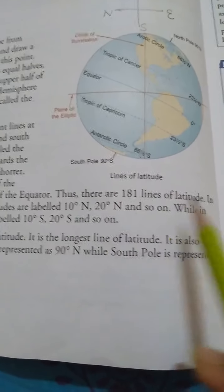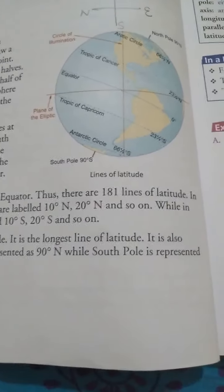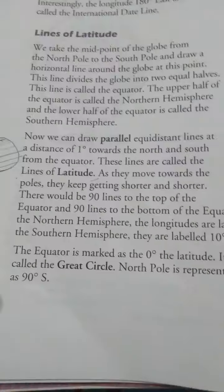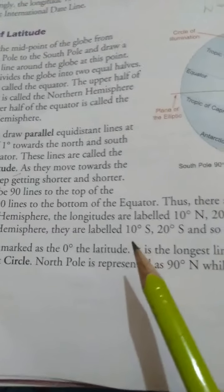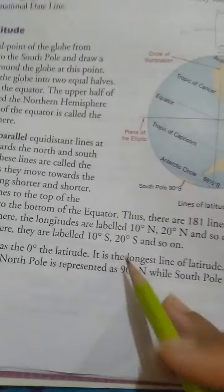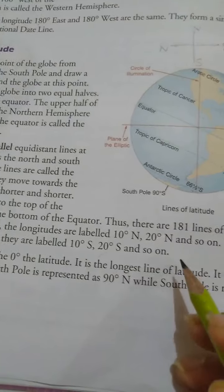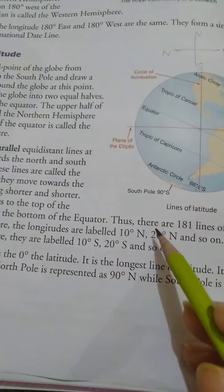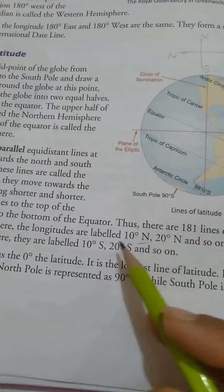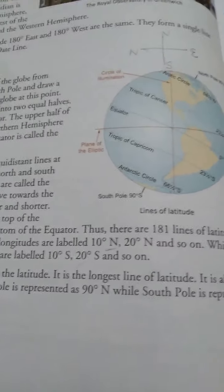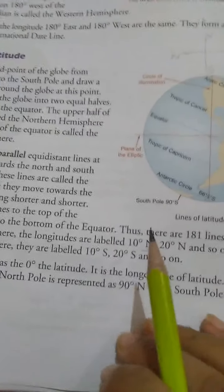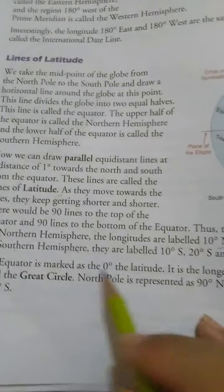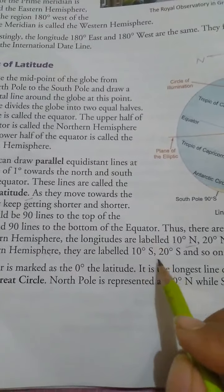Thus, there are 181 lines of latitude in total. In the Northern Hemisphere, the latitudes are labeled 10 degrees North, 20 degrees North, and so on up to 90 degrees North. While in the Southern Hemisphere, they are labeled as 10 degrees South, 20 degrees South, and so on.